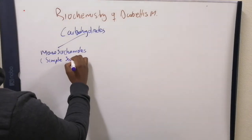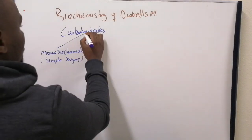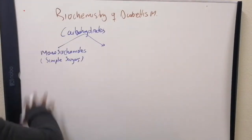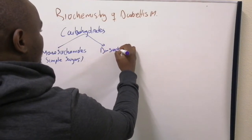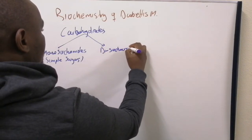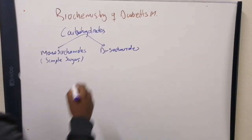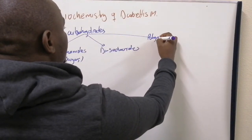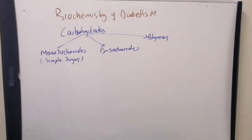Monosaccharides are the simplest form, the most basic units of carbohydrates. If you combine monosaccharides you get disaccharides. If you get a long chain of disaccharides, a lot of disaccharides linked together, then you get your polymers — carbohydrate polymers.